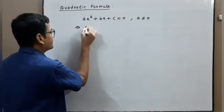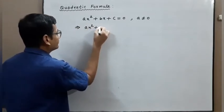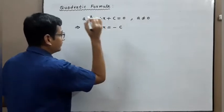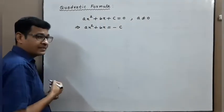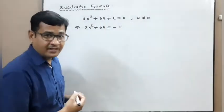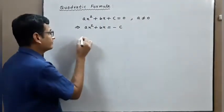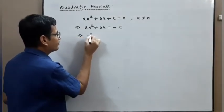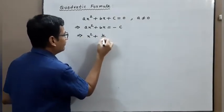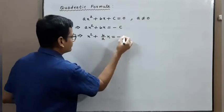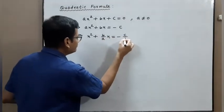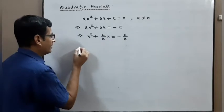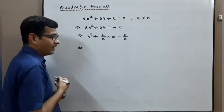First step: separate the variable and constant terms. After this, divide both sides by a, so we get x squared plus b upon a times x minus c upon a. After this, we proceed to completing the square.